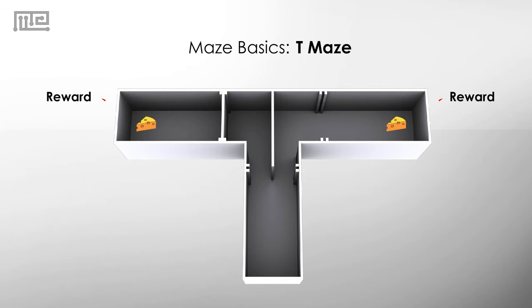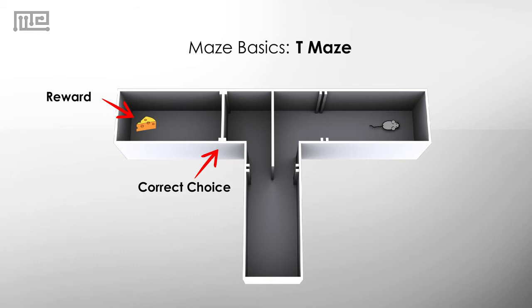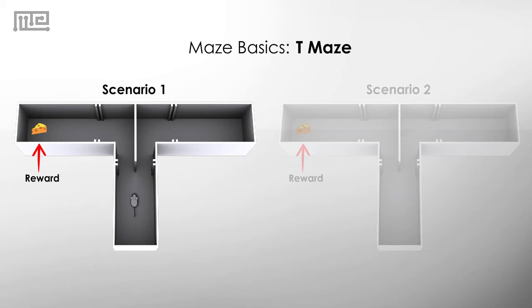Rewards are placed at the ends of both arms and one door is closed — this is the correct choice arm. The mouse runs to the open arm and consumes the reward. The door to the correct choice arm is then opened and the mouse is returned to the start.